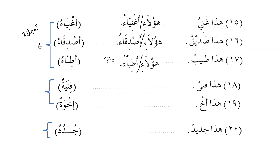Pattern 7 is فِعْلَة. هذا فتى — this is a young man — becomes هؤلاء فِتْيَة — these are young men. There is a question about whether this pattern applies to the dual; however, the dual does not have specific broken plural patterns — the dual follows the sound pattern.